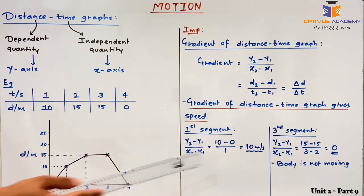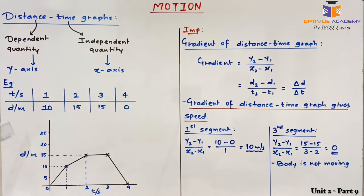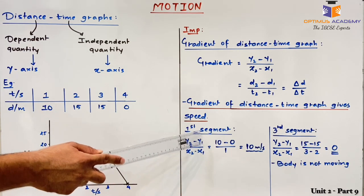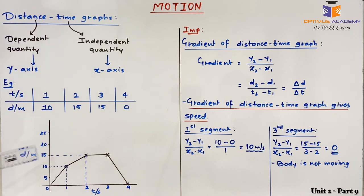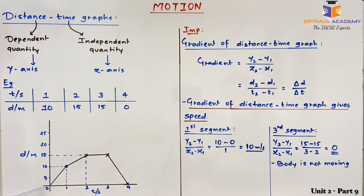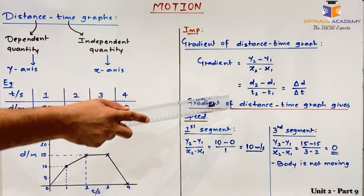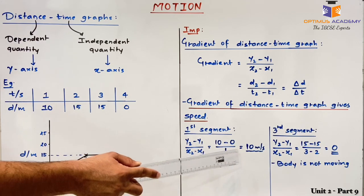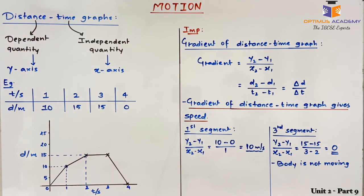I have taken two examples to calculate gradient. For the first segment, between 0 and 1 second: gradient = (y2 − y1) / (x2 − x1) = (10 − 0) / (1 − 0) = 10. So the gradient of the first segment is 10. Since the gradient of a distance time graph represents speed, the unit is meters per second.